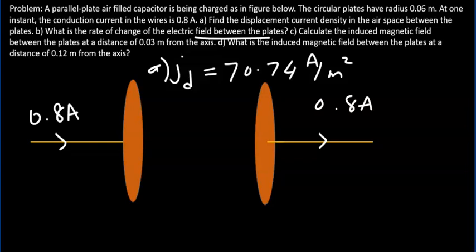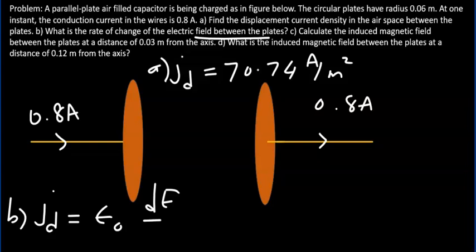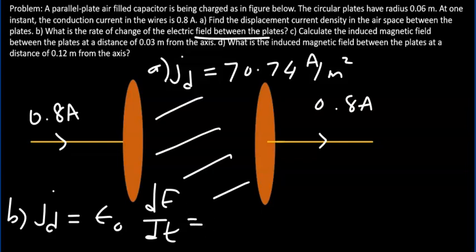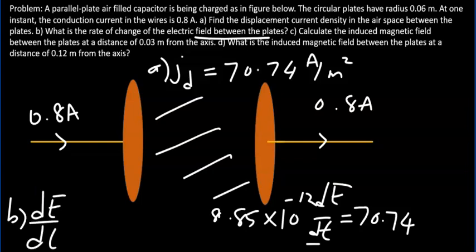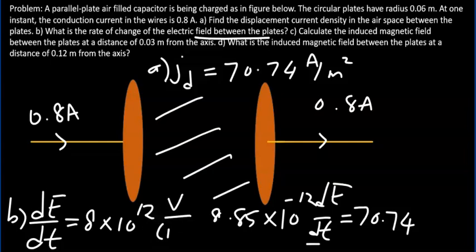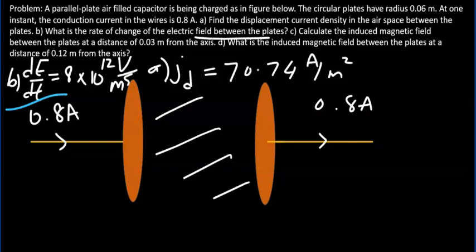Now, the rate of change of the electric field between the plates. From our discussion, the displacement current density is related to the rate of change of electric field by Jd = epsilon-naught × dE/dt. Since this is an air-filled capacitor, we approximate it as vacuum. We know epsilon-naught is 8.85 × 10⁻¹² . So 8.85 × 10⁻¹² × dE/dt = 70.74, and we can calculate dE/dt. That gives dE/dt = 8 × 10¹² volts per meter per second.